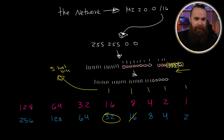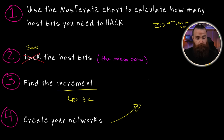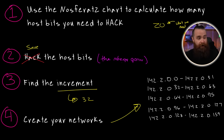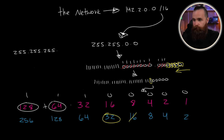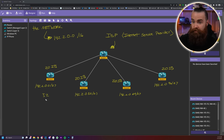We hacked the host bits — now let's find our increment. The increment is the last network bit, and throwing that octet on the Nosferatu chart, we can see our increment is 32. Let's create our networks. The first will be 142.2.0.0 through 142.2.0.31. Converting the binary subnet mask into decimal: we know all ones are 255, and for the last octet, 128 plus 64 plus 32 gives us 224. In CIDR notation: 8, 16, 24, 25, 26, 27 — we get a slash 27. Each network will have 32 addresses, giving 30 usable addresses, well within the range of needing 20 — and it gives us room for growth.